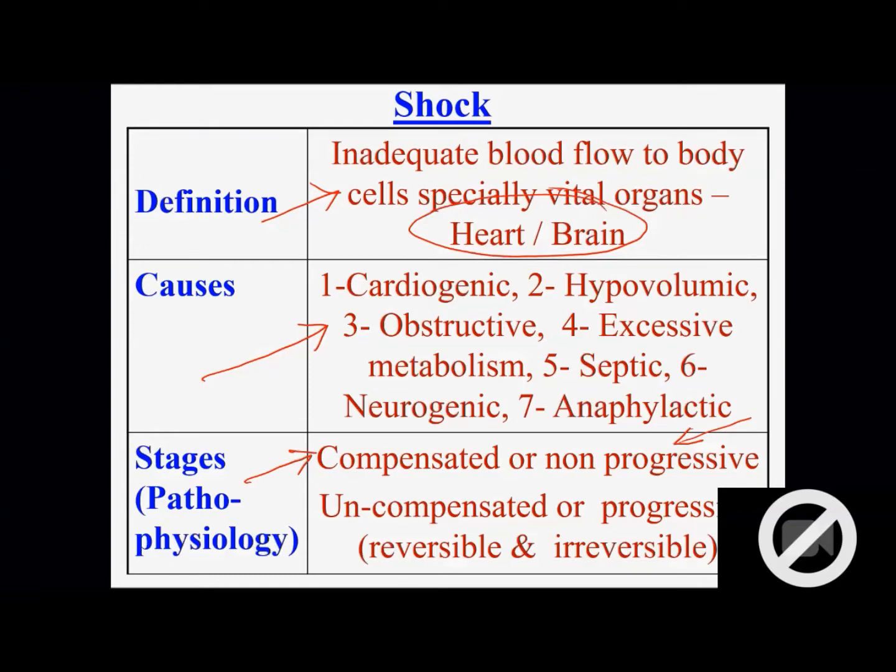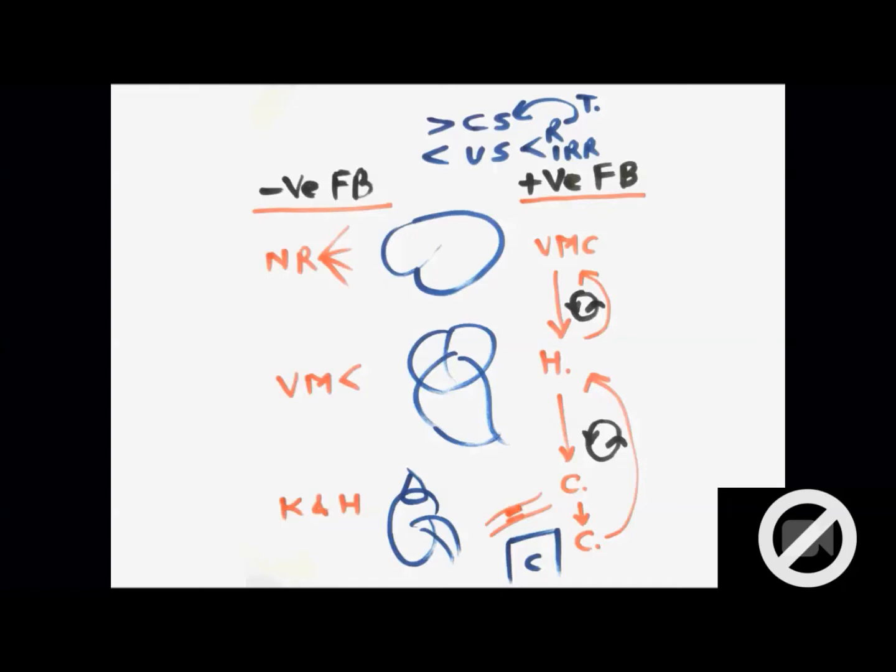Otherwise shock's basic tendency is uncompensated or progressive. Shock leads to shock and it progresses. The positive feedback mechanism starts dominating and then the shock progresses. Although in uncompensated we have two stages: reversible, where right therapy can bring the patient back to compensated. But then if things are late, irreversible where the patient cannot be saved.